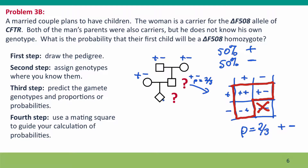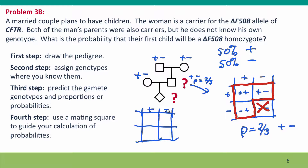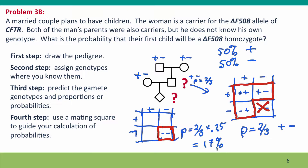To predict the child's probability, we note that if we knew for sure the father was a carrier, the mating square already tells us the probability of a minus-minus child is 0.25. But since there's only a two-thirds chance the father is a carrier, the actual probability is two-thirds of 0.25, which equals one sixth — about 17%.